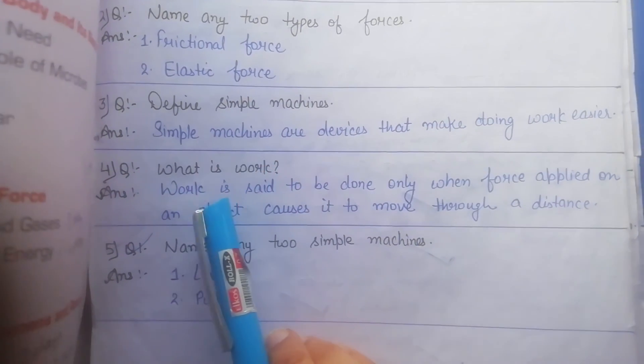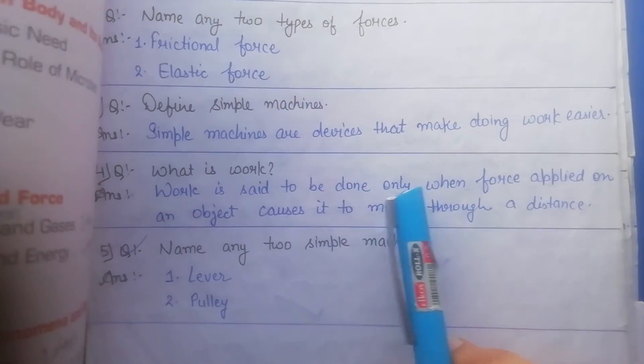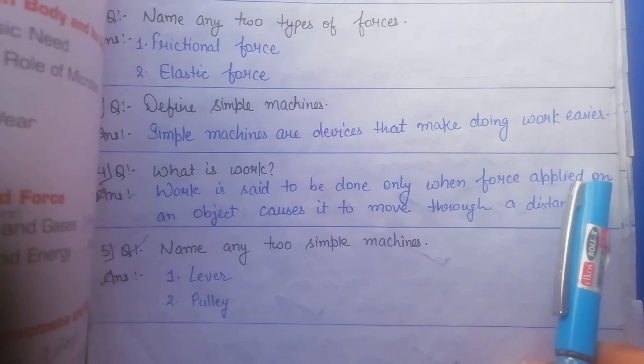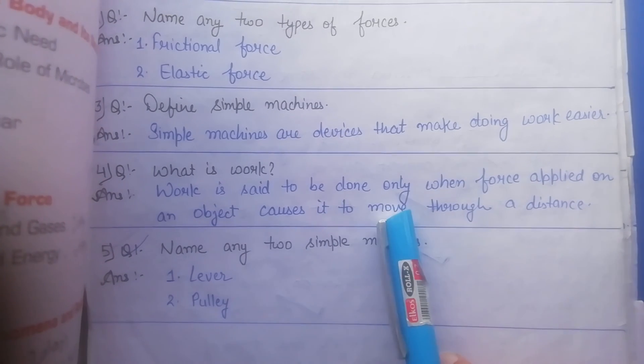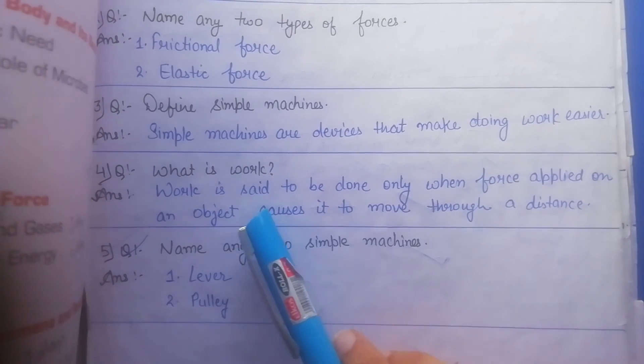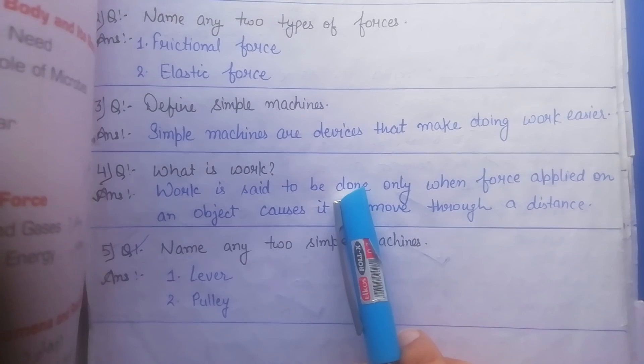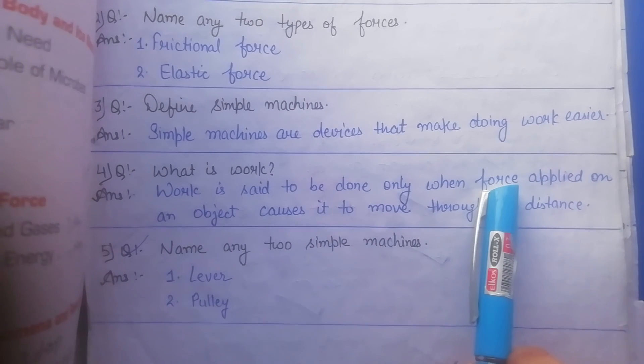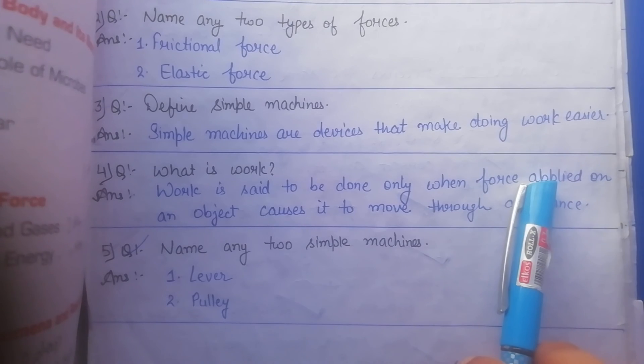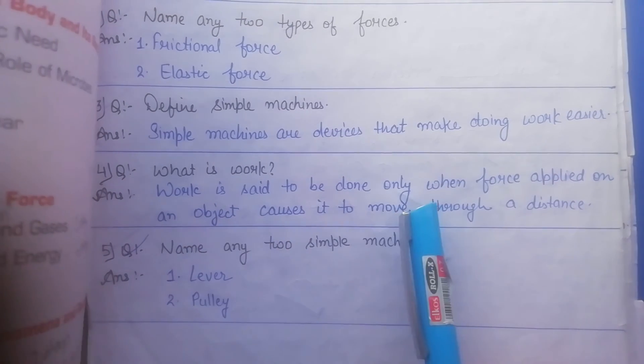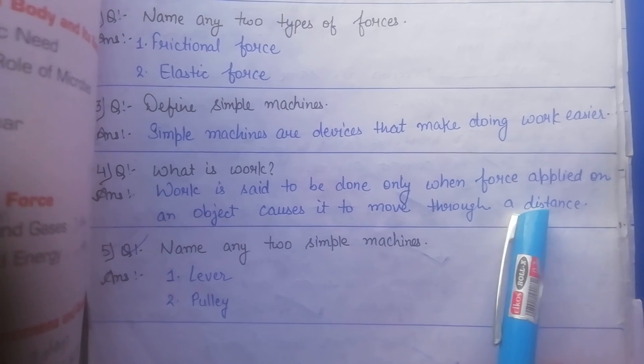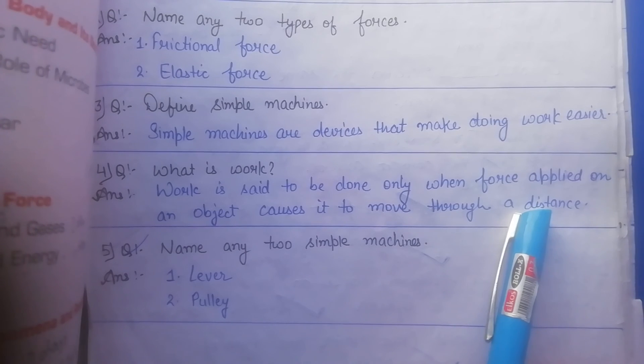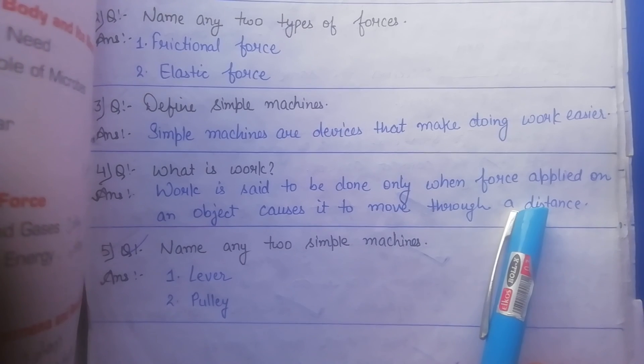What is work? Work is set to be done only when force applied on an object causes it to move through a distance. So we can say that work is going to be done only when force is applied on an object to move through a distance. This is the definition of work.